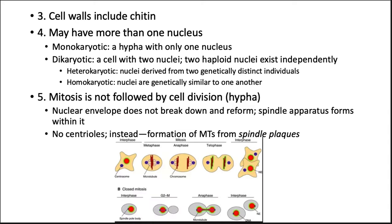Some more unique characteristics of fungi: their cell walls are made of chitin — the same material that makes up exoskeletons of arthropods. This is one of the shared traits making fungi more closely related to animals than plants, because plants have cell walls made of cellulose. Fungi may have more than one nucleus. Monokaryotic means the hyphae has only one nucleus. Dikaryotic means a cell with two nuclei — two haploid nuclei that exist independently. The nuclei can be the same (homokaryotic) or come from two genetically distinct individuals (heterokaryotic).